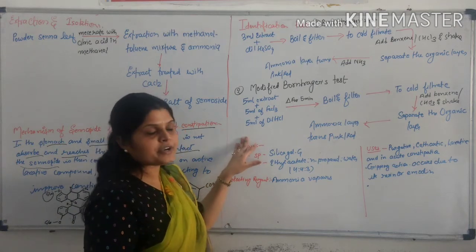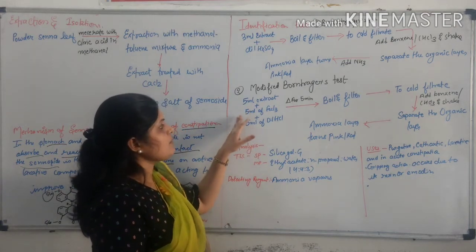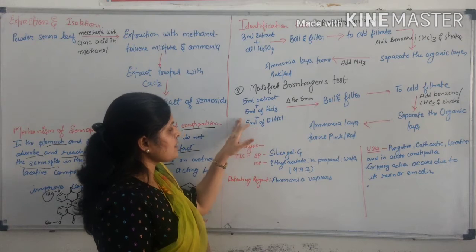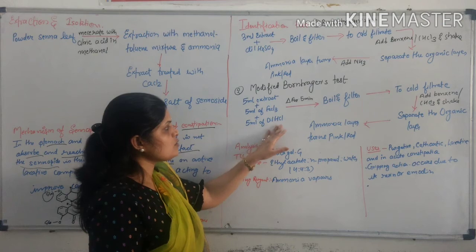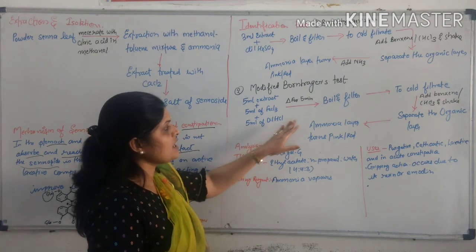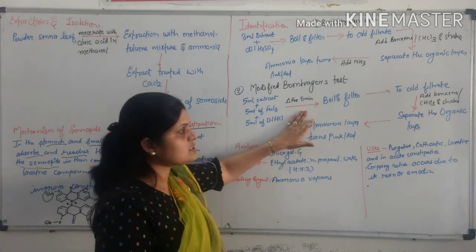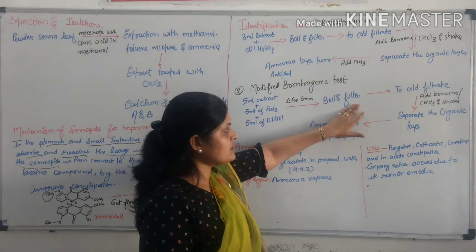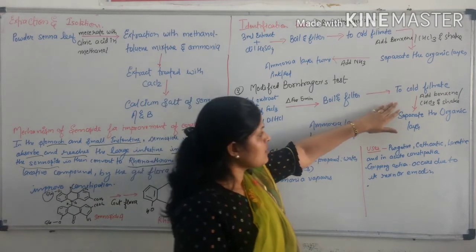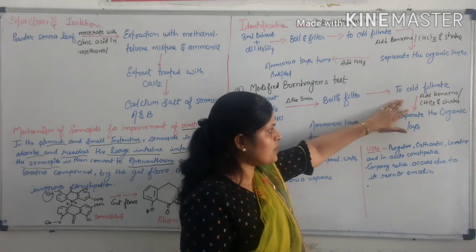Modified Borntrager's test: In which 5 ml of extract, then add 5 ml of hydrochloric acid, then 5 ml of ferrous sulfate. Then, heat for 5 minutes. It is boiled and filtered. Cold filtrate is obtained.